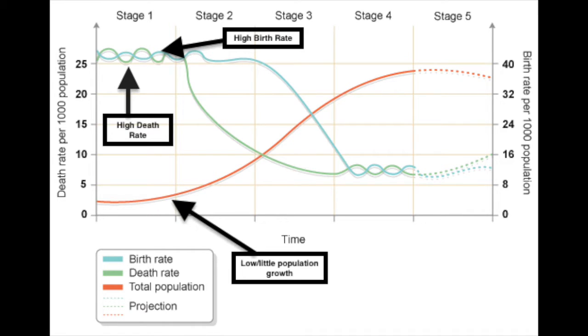The demographic transition model officially has four stages in it, though a lot of the images we look at have a fifth stage, which we'll talk about later. Stage one is characterized by high birth rates and high death rates, with a steady but low population. Most of human history has been spent in stage one, and more developed countries were in stage one until the 1600s to 1700s before we start seeing them leave.